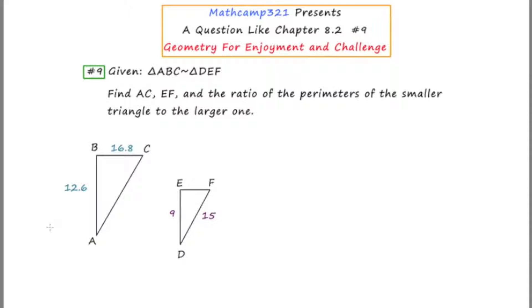triangle ABC is similar to triangle DEF. And with that piece of given information, they want us to find a bunch of things: the length of AC, the length of EF, and the ratio of the perimeters of the smaller triangle to the larger one.